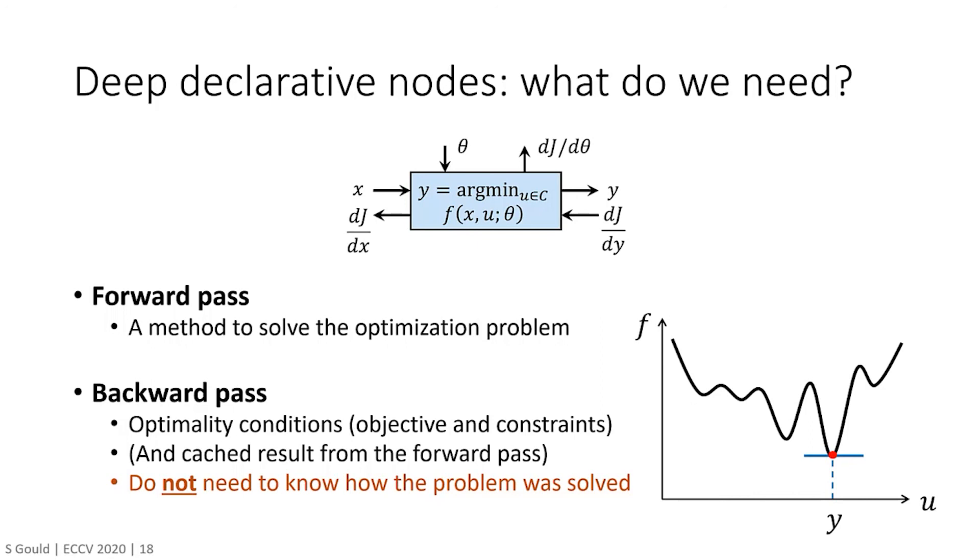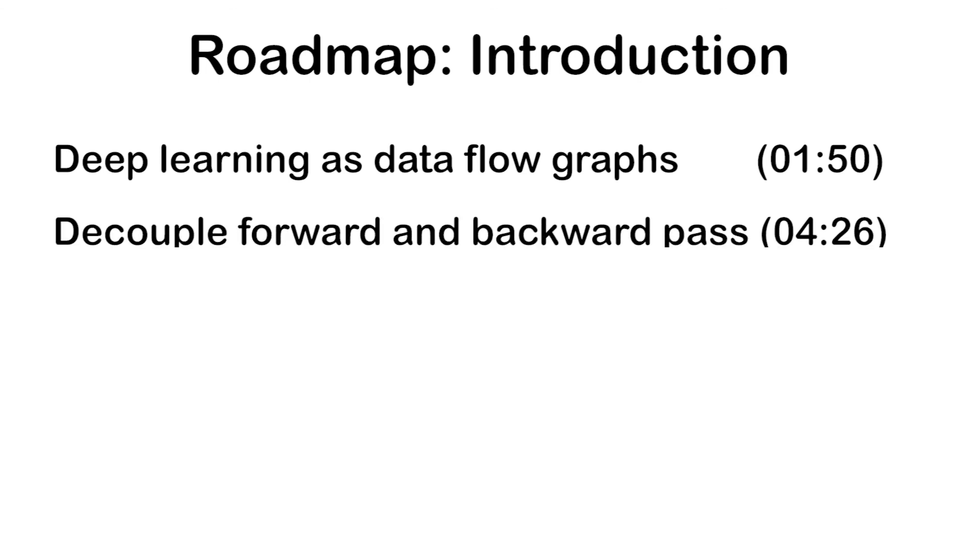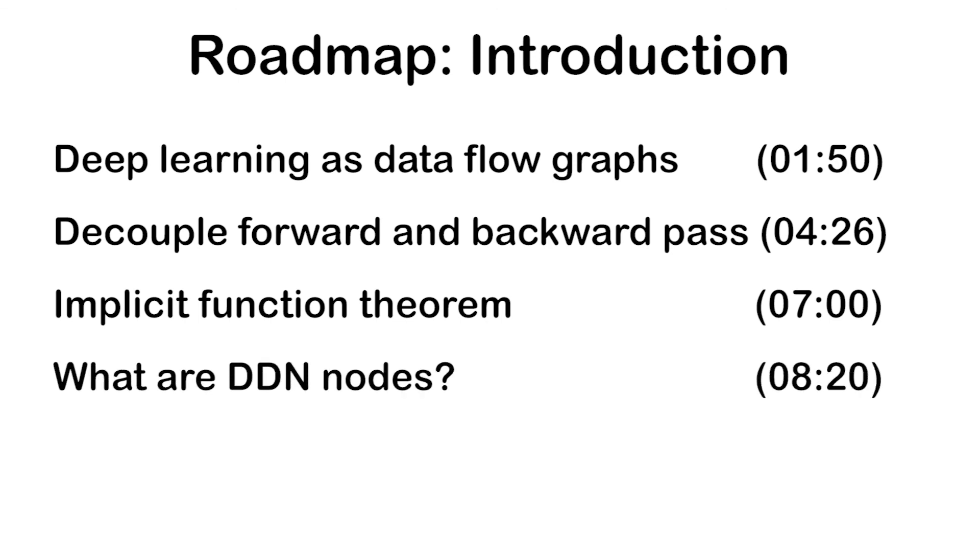Importantly, we do not need to know how the problem is solved in the forward pass. The remainder of this tutorial will explore these concepts further, plus other considerations such as computational efficiency and uniqueness of solutions on the theoretical side, and software frameworks and applications on the practical side. I would like to thank Steve for this talk. At this point in the tutorial, you should be familiar with the concept of deep learning as data flow graph, know how to decouple forward and backward pass, the implicit function theorem, and what are deep declarative nodes. In the next part of the tutorial, Dylan Campbell will explain some applications and hands-on coding.